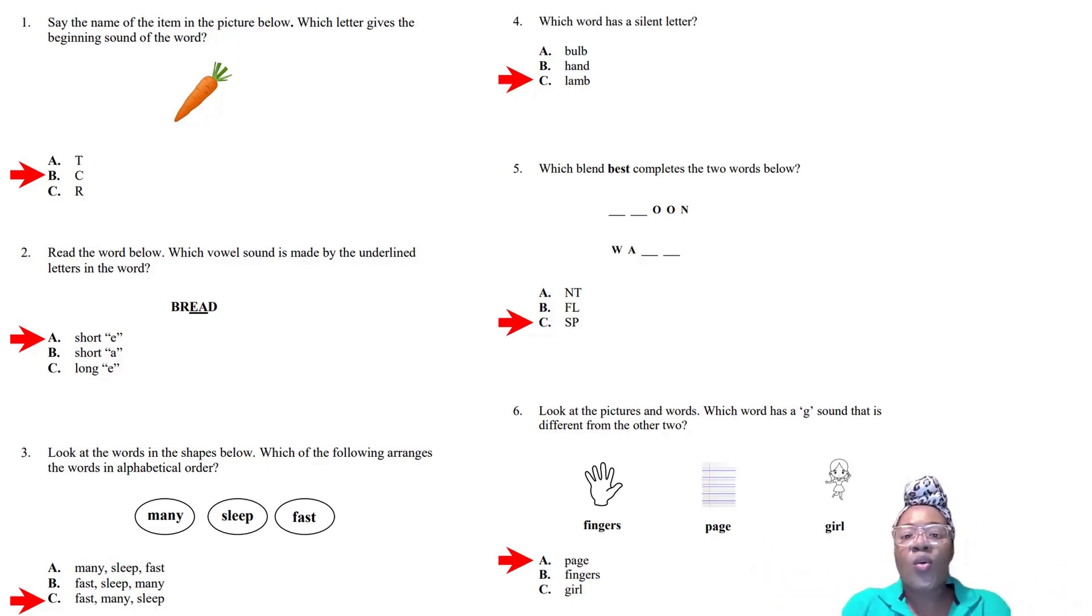Question four: Which word has a silent letter? The easiest way is to call the word aloud or in your head. Bulb, hand, lamb. Lamb, there's no B sound, it's silent. That has to be the answer.